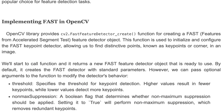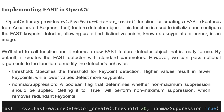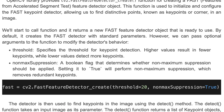Next, we implement the FAST method with OpenCV. OpenCV provides a FastFeatureDetector.create() function for creating a FAST feature detector object. This function is used to initialize and configure the FAST key point detector, allowing us to find distinctive points known as key points or corners in an image. Calling this function returns a new FAST feature detector object that is ready to use. By default, it creates the detector with standard parameters.